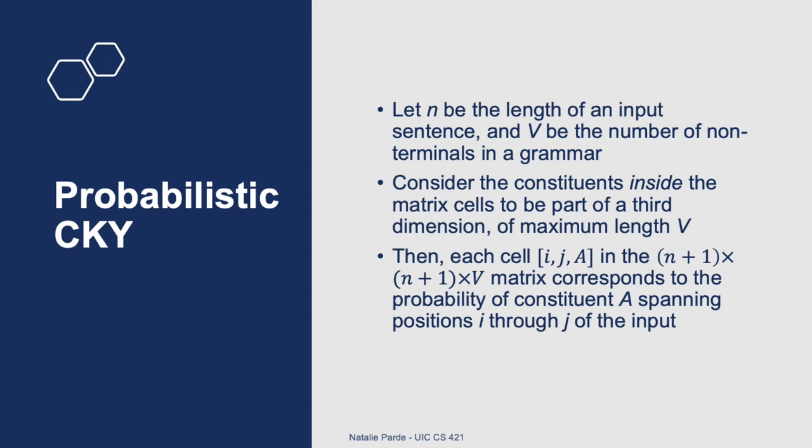Formally, we can say that our input is of length n, where n is the number of words in the input. We can let V be the number of non-terminals in our grammar, so there could be a maximum of V probability values in a cell in the third dimension of our matrix. A cell at IJA corresponds to the probability of constituent A spanning positions I through J of the input.